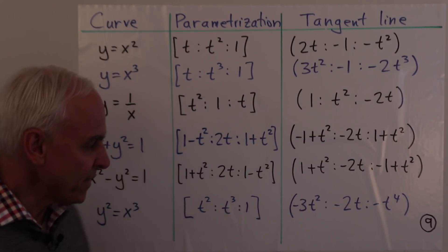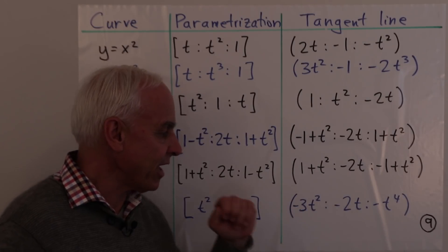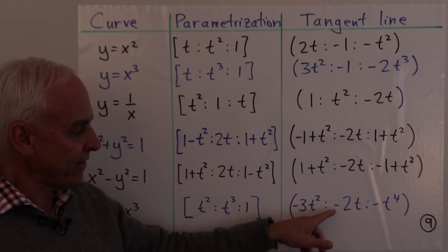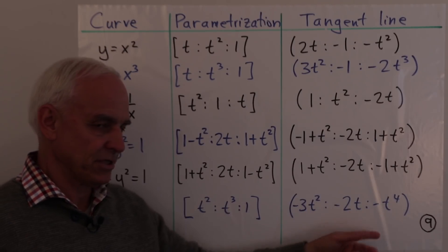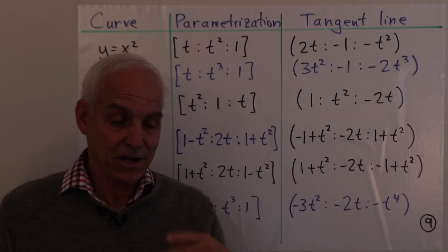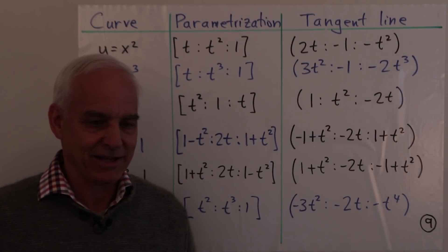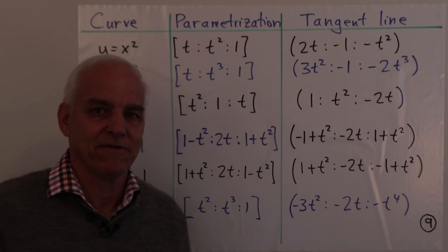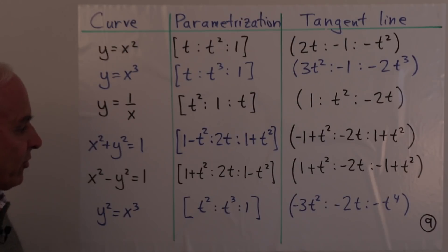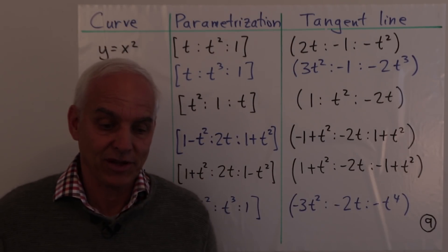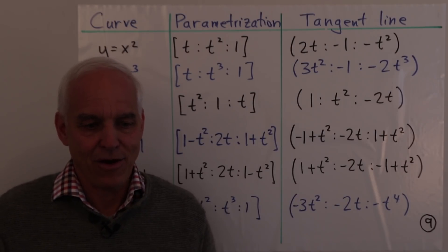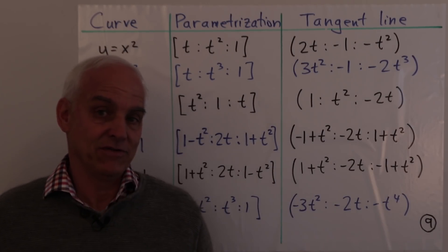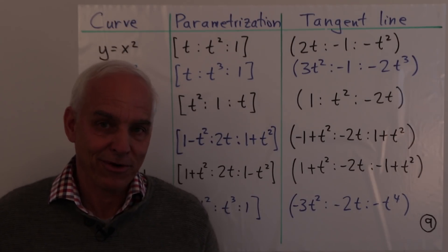A more exotic example is the semi-cubical parabola y²=x³, with parametrization (t², t³, 1). The corresponding tangent line has the form −3t²x + 2ty − t⁴ = 0, but something special happens at t=0: setting t=0 gives the proportion 0:0:0, which is not a legitimate projective line equation. This reflects the fact that the tangent is problematic to define at the origin for this curve. These are good examples to work through, and there are many more in the course work problems. I'm Norman Weilberger, thanks for listening.